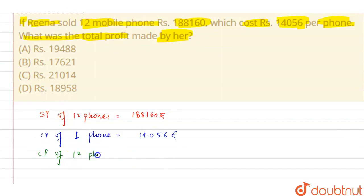CP of 12 phones will be how much? When one phone is this much, multiply by 12. That becomes the CP of 12 phones, right? That value comes out to be Rs. 168,672.